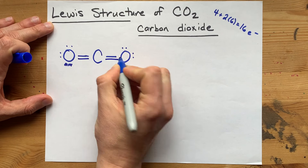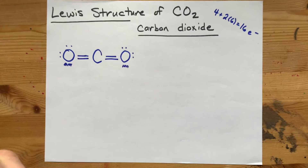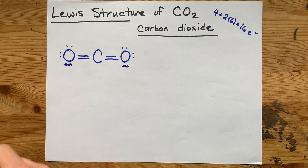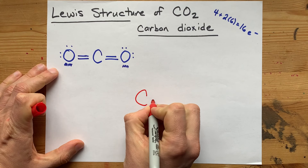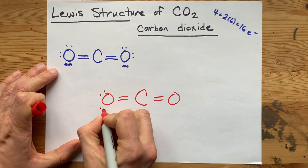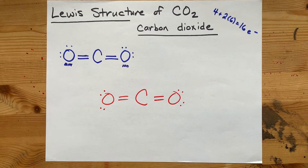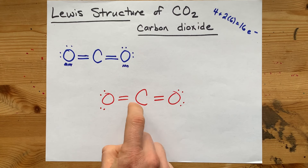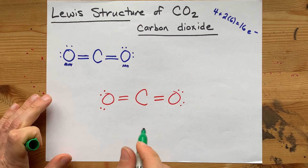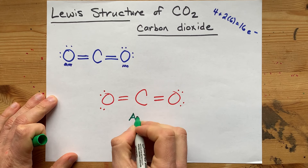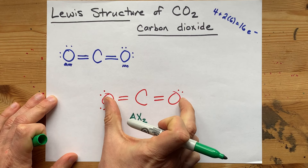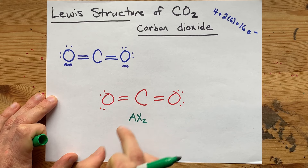We'll do the same on the other side as well. Your complete, valid, and inarguable Lewis structure for carbon dioxide is carbon double bonded to two separate oxygens, and each of those oxygens has two lone pairs on it as well. If you're here because you wanted to know about the bond angle, the VSEPR notation here is AX2 — one central atom surrounded by two atoms and no lone pairs on it.